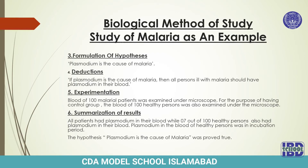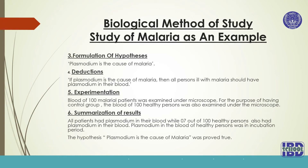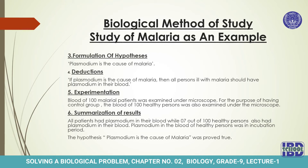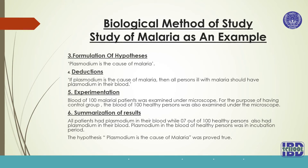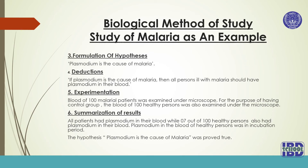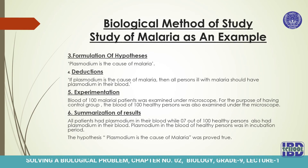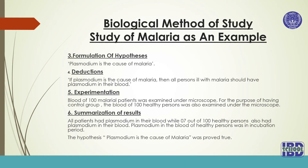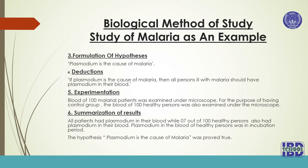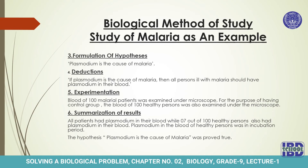Experimentation was done as follows: the blood of 100 malarial patients was examined under a microscope. For the control group, the blood of 100 healthy persons was also examined under the microscope. Summarization of results: all patients had plasmodium in their blood, while seven out of 100 healthy persons also had plasmodium in their blood — that plasmodium was in the incubation period, which was later studied and found out. The hypothesis that plasmodium is the cause of malaria was proved correct.